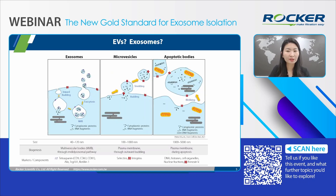According to the International Society for Extracellular Vesicles, ISEV, EVs are classified into three subtypes based on their biogenesis. First, exosomes — they are the smallest subtype, ranging from 40 to 120 nm. They are primarily formed through an endocytic pathway and carry endosome-associated proteins like ALIX, TSG-101, and well-known tetraspanin markers, including CD9, CD63, and CD81.